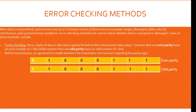Error Checking. When data is transmitted, some errors may occur. Common causes include power surges, damaged cables, electric interference, and synchronization problems. Error checking methods are used to check whether data is corrupted or damaged. Number one, parity checking — a byte of data is allocated a parity bit before transmission. Systems using even parity have an even number of one bits, while systems using odd parity have an odd number of one bits. Before transmission, an agreement is made between the transmitter and receiver regarding the parity type. The first byte shows even parity since there is an even number of ones, while the second byte shows odd parity since there is an odd number of ones.